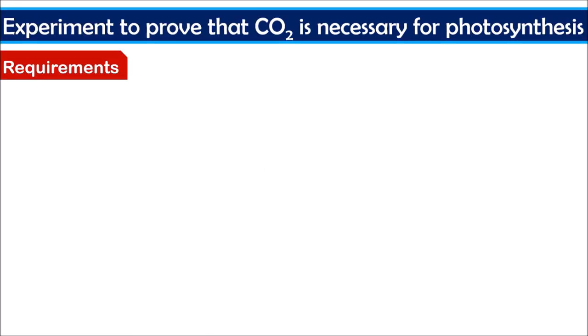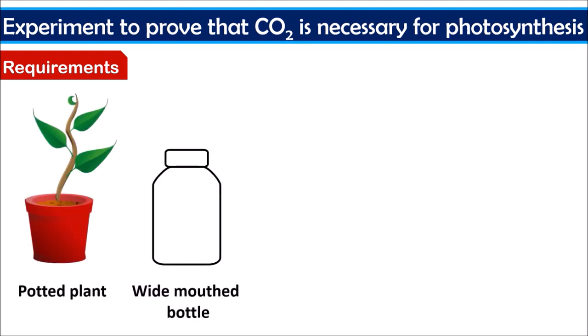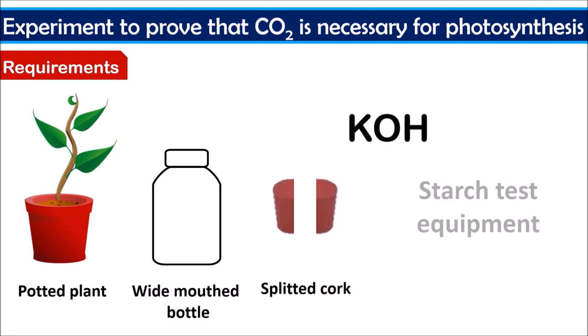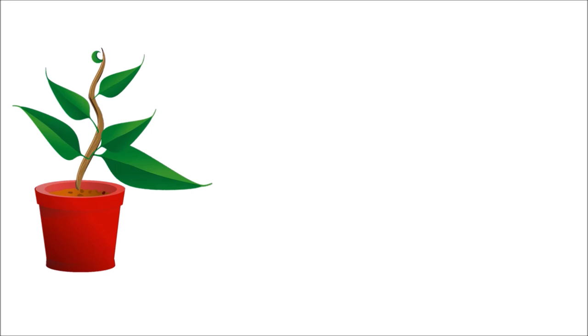Let us conduct an experiment to prove that carbon dioxide is necessary for photosynthesis. The requirements are: a potted plant, a wide-mouthed bottle, a split cork, potassium hydroxide, and starch test equipment. Take a potted plant. Before conducting the experiment, it has to be de-starched.